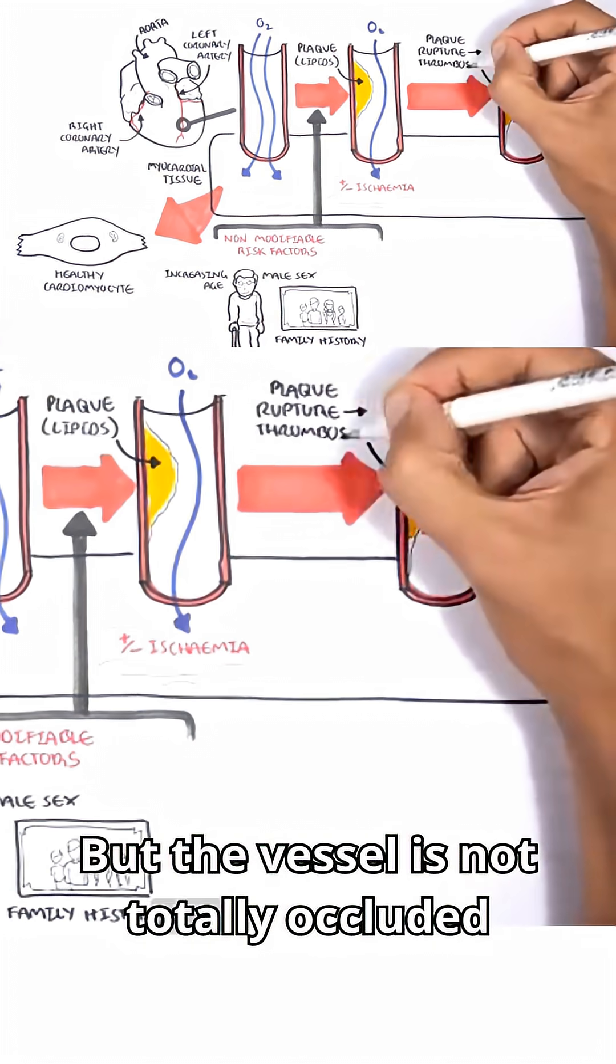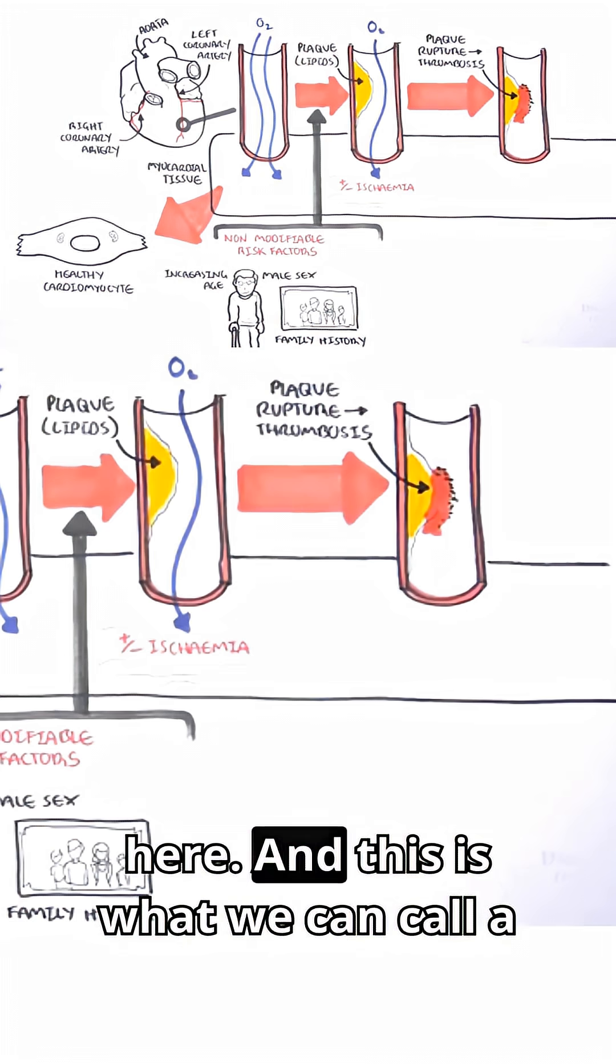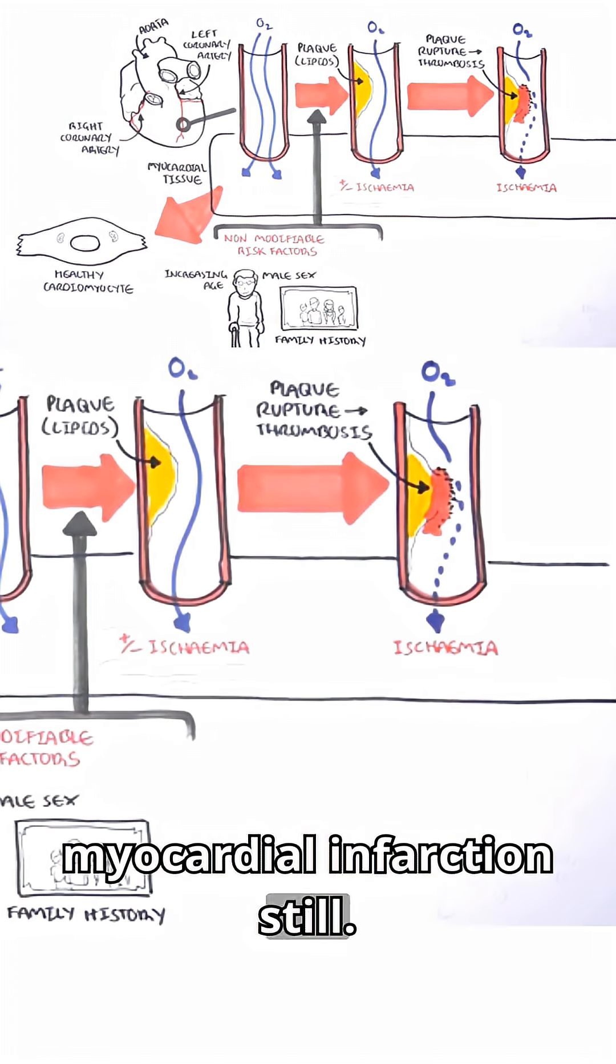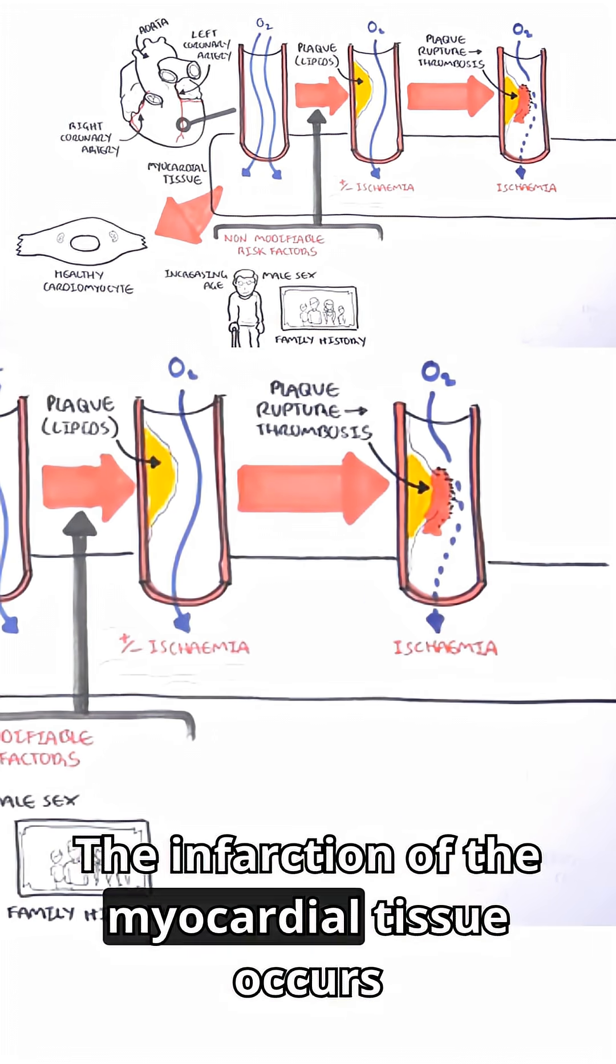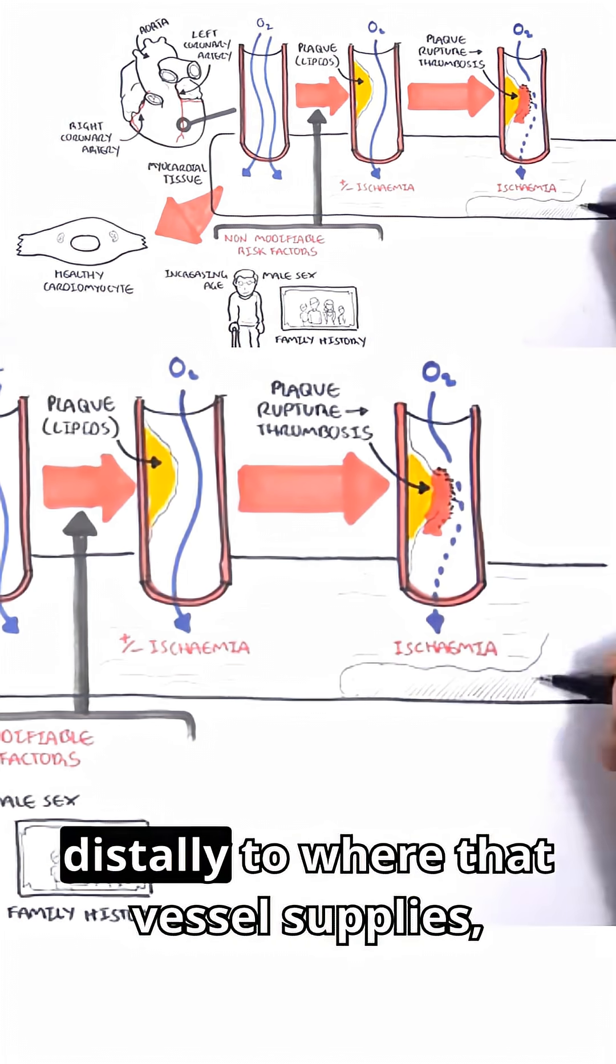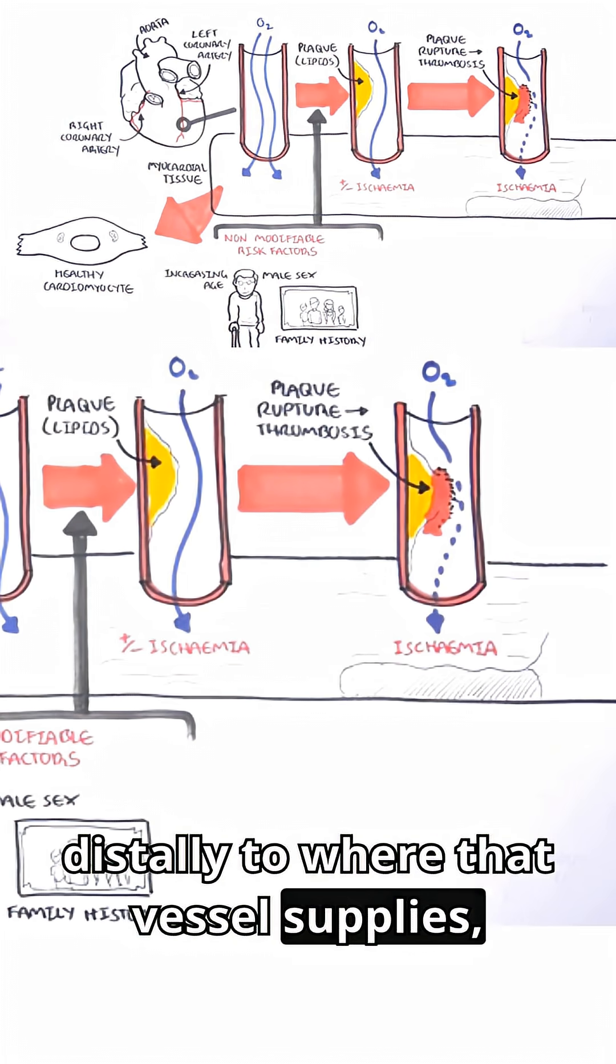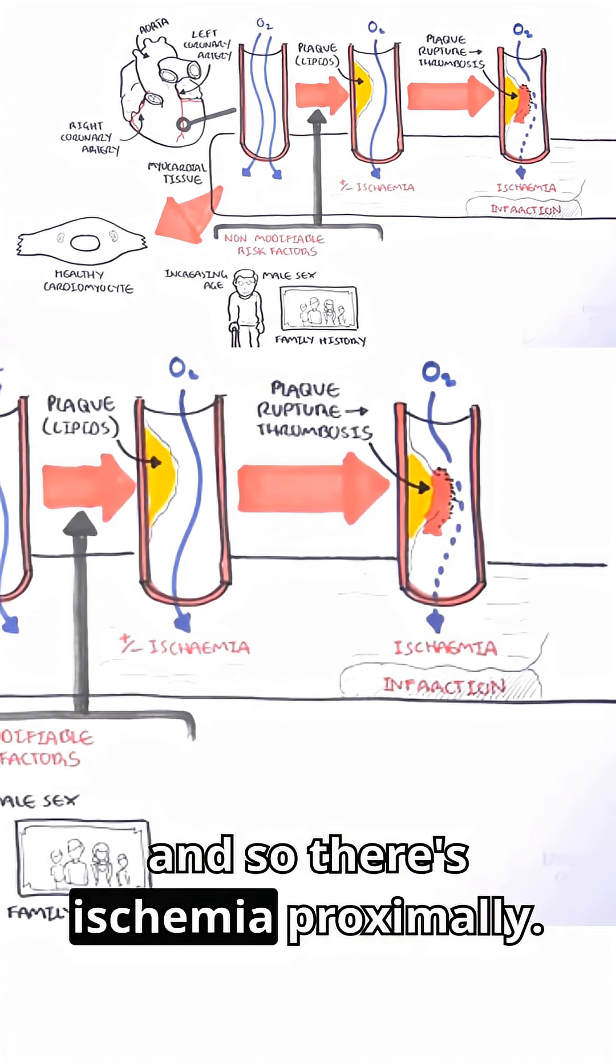But the vessel is not totally occluded here, and this is what we can call a myocardial infarction still. The infarction of the myocardial tissue occurs distally to where that vessel supplies, and so there's ischemia proximally.